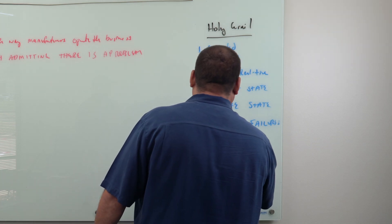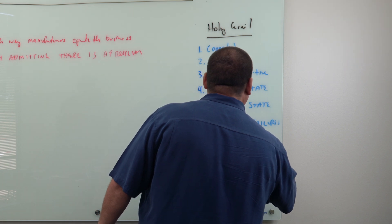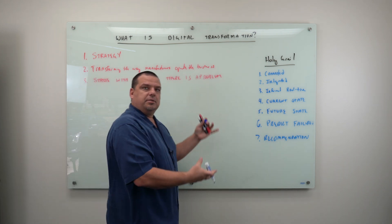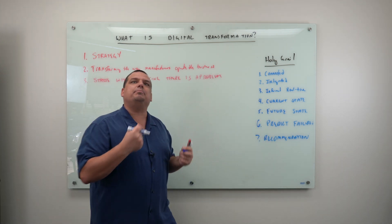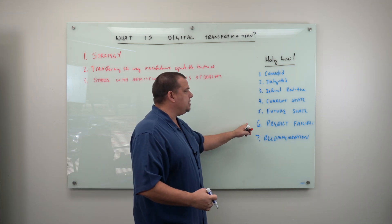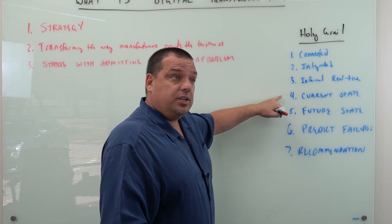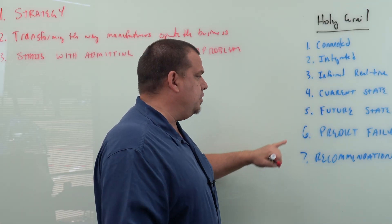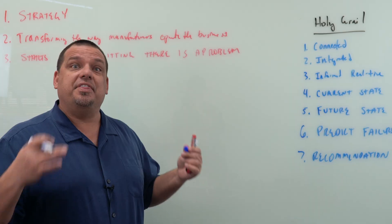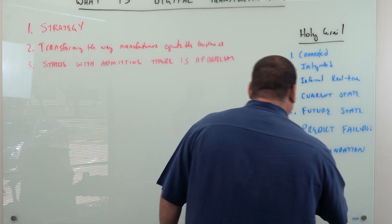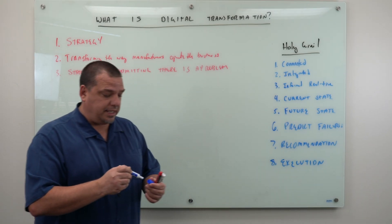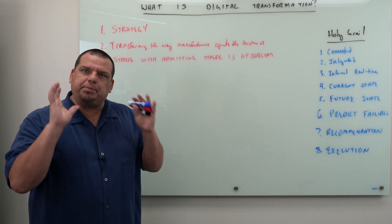Number seven, the holy grail company has automated recommendations. When you're a holy grail manufacturer, this connected ecosystem is able to recommend operational and strategic adjustments through artificial intelligence, based on the prediction of failures and the prediction of the future state. Number eight, a holy grail manufacturer is able to execute those recommendations — that's where the human being comes in.